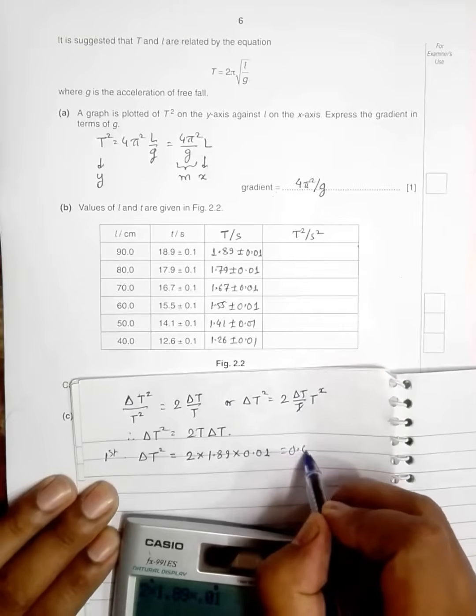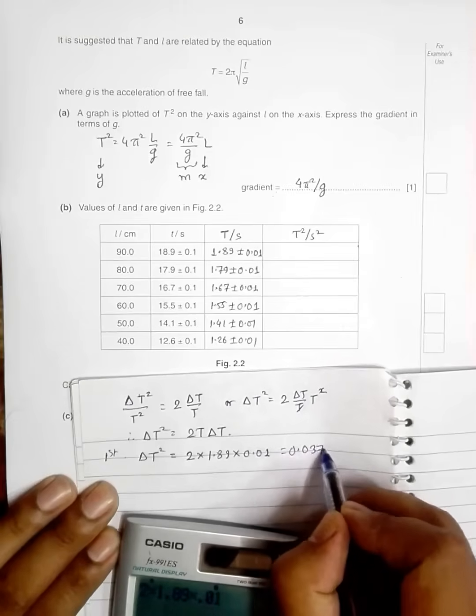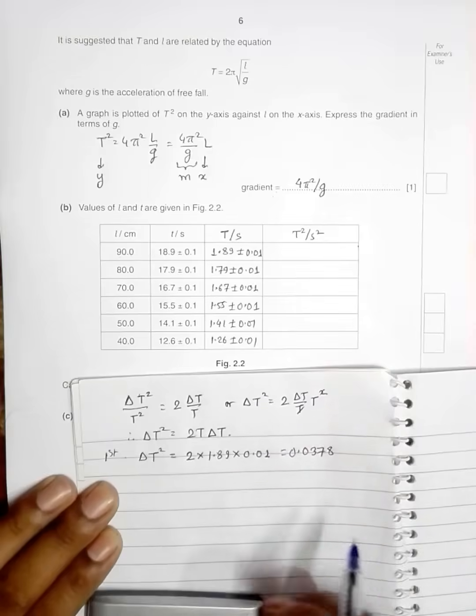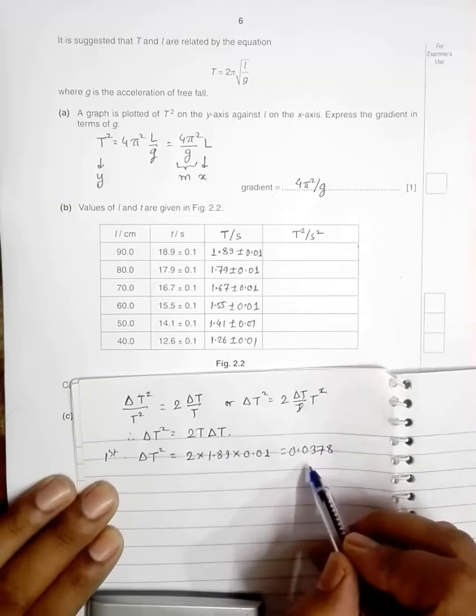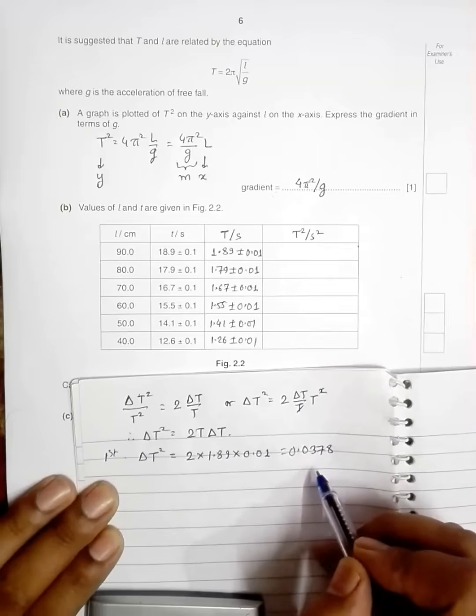Now I have to use this uncertainty in 1 or 2 significant figures. I repeat, 1 or 2 sf.